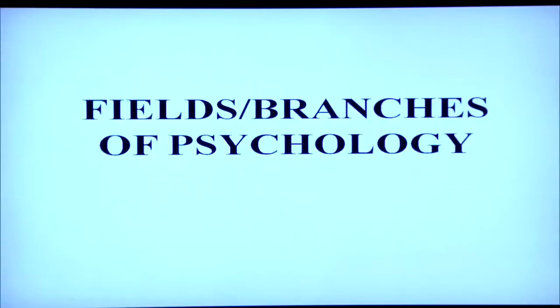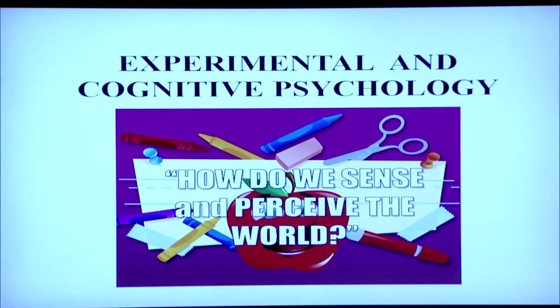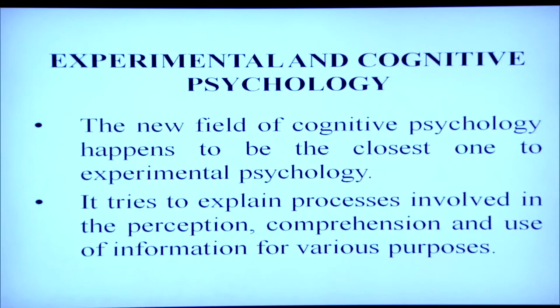Let us first know about the different branches of psychology. First, we will discuss experimental and cognitive psychology. Experimental psychology has been concerned with the study of psychological processes such as sensation, perception, learning, memory, motivation, emotion, etc. It is basically related with how we sense and perceive the world around us. The new field of cognitive psychology happens to be the closest one to experimental psychology. It also tries to explain processes involved in the perception, comprehension and use of information for various purposes.